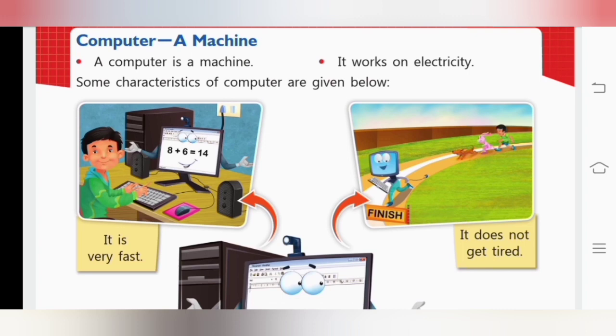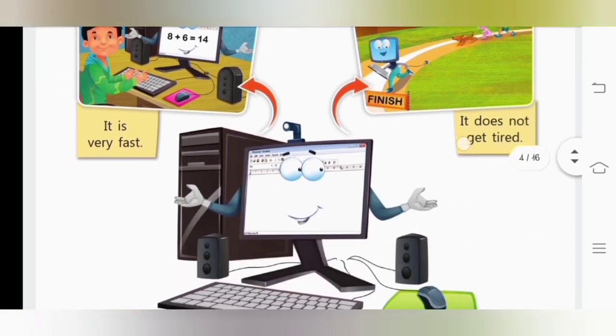And here are some characteristics of computer which are given below. The first characteristic is it is very fast. For example, when we solve sums in the computer, it solves it in a very less time. So it is very fast.